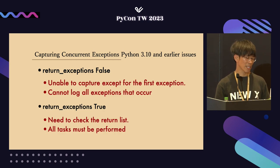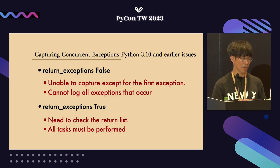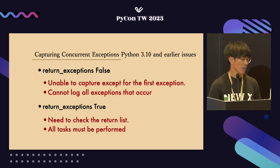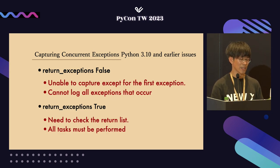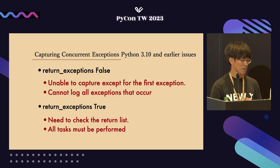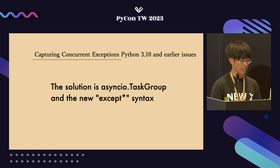For example, consider a scenario where you are making 10 HTTP requests concurrently. Suppose an exception occurs in the first task. In that case, you would need to wait until the remaining nine tasks — which might also fail — are completed. This means waiting for all 10 results even if they end up with the same error. The solution is asyncio.TaskGroup with the new except* syntax.